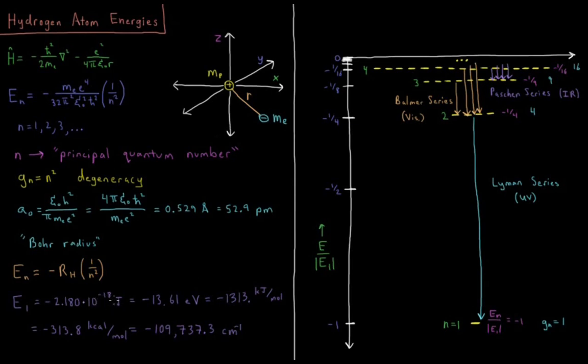10 to the minus 18 joules is the energy scale at which these levels occur. That's also equal to negative 13.61 electron volts, or negative 1313 kilojoules per mole, negative 313.8 kilocalories per mole, or negative 109,737.3 wavenumbers.